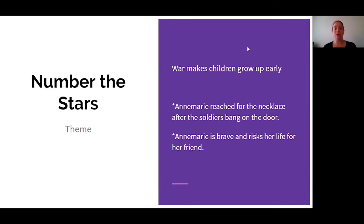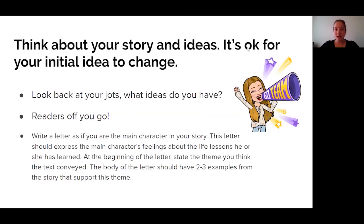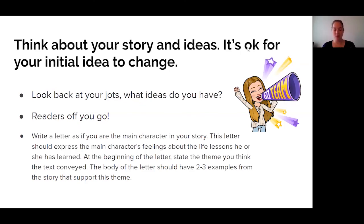In many cases, Anne-Marie has to risk her life for her friends, and that's not something we would normally do as children. It's okay if your initial idea changes. At first I thought Number of the Stars is about Anne-Marie being brave, but as I put my lens on for interpreting, I realized that the war has a lot to do with it too — and why she's brave, and why she kind of has to act like an adult now. So war really makes kids grow up quickly. Look back at your jots as you're reading your books — what ideas do you have, and have they changed since the beginning of the story?